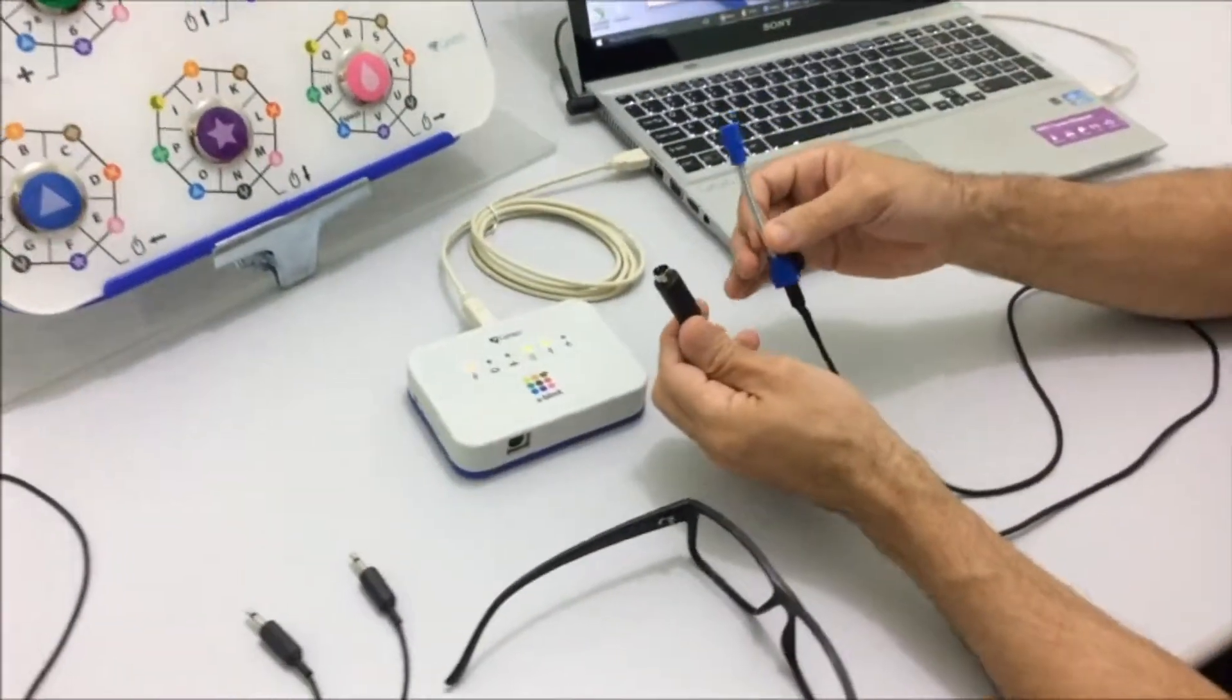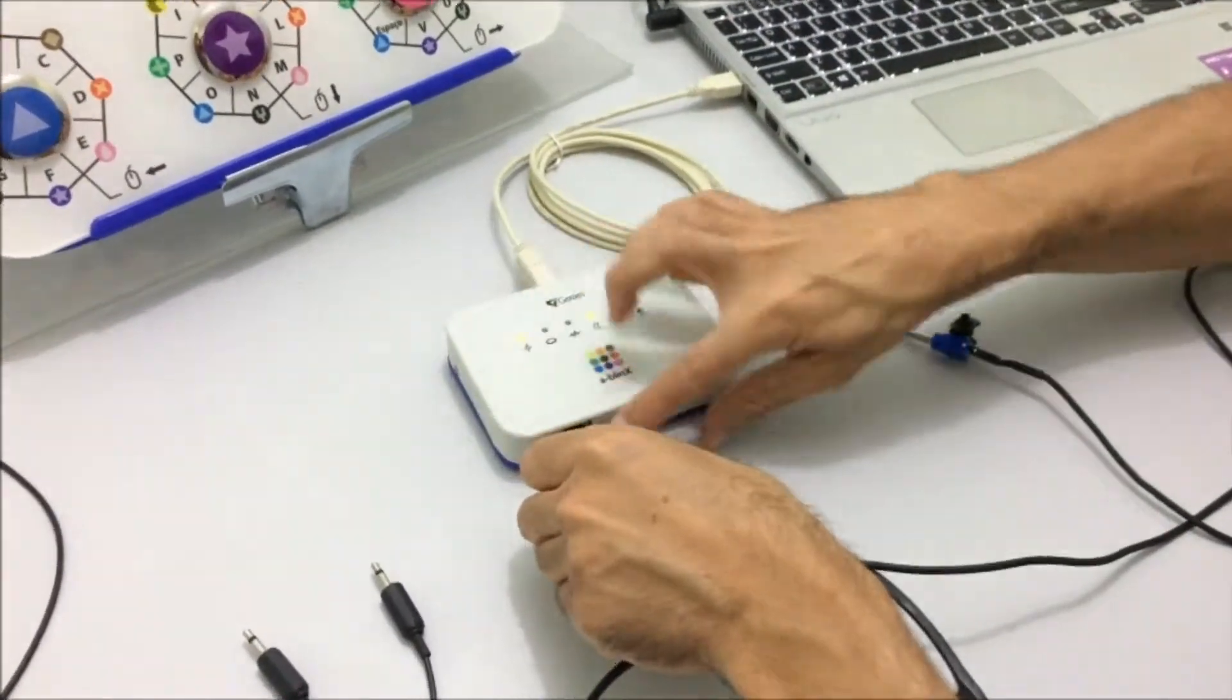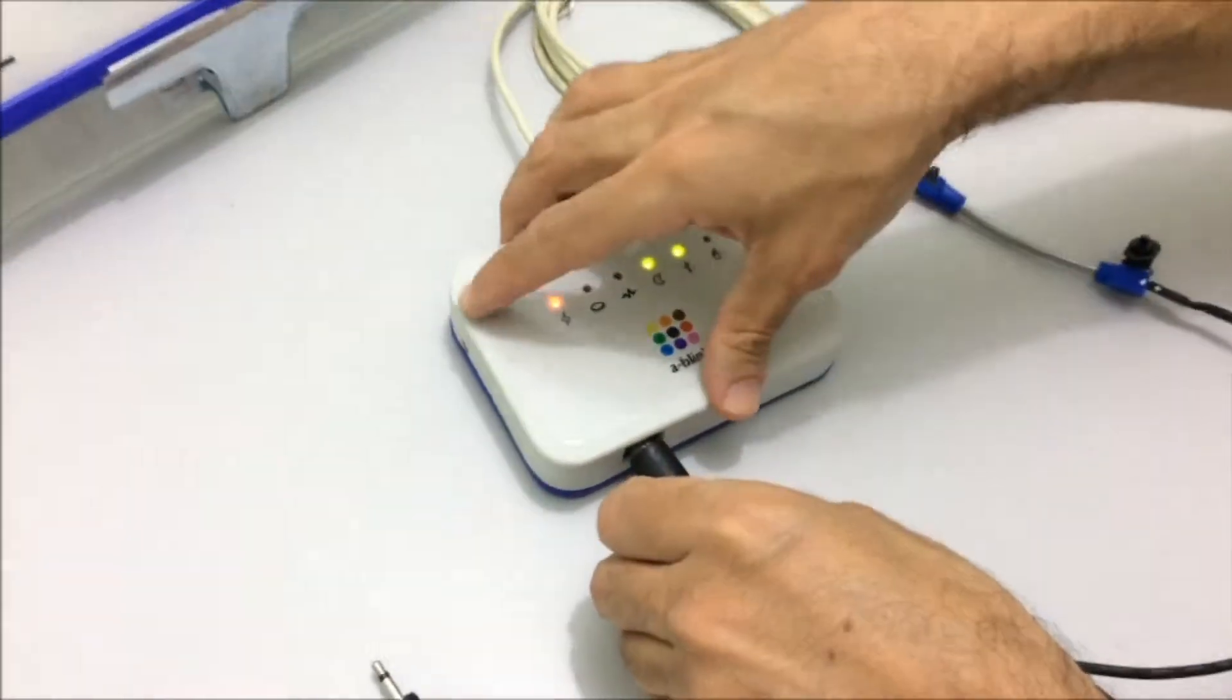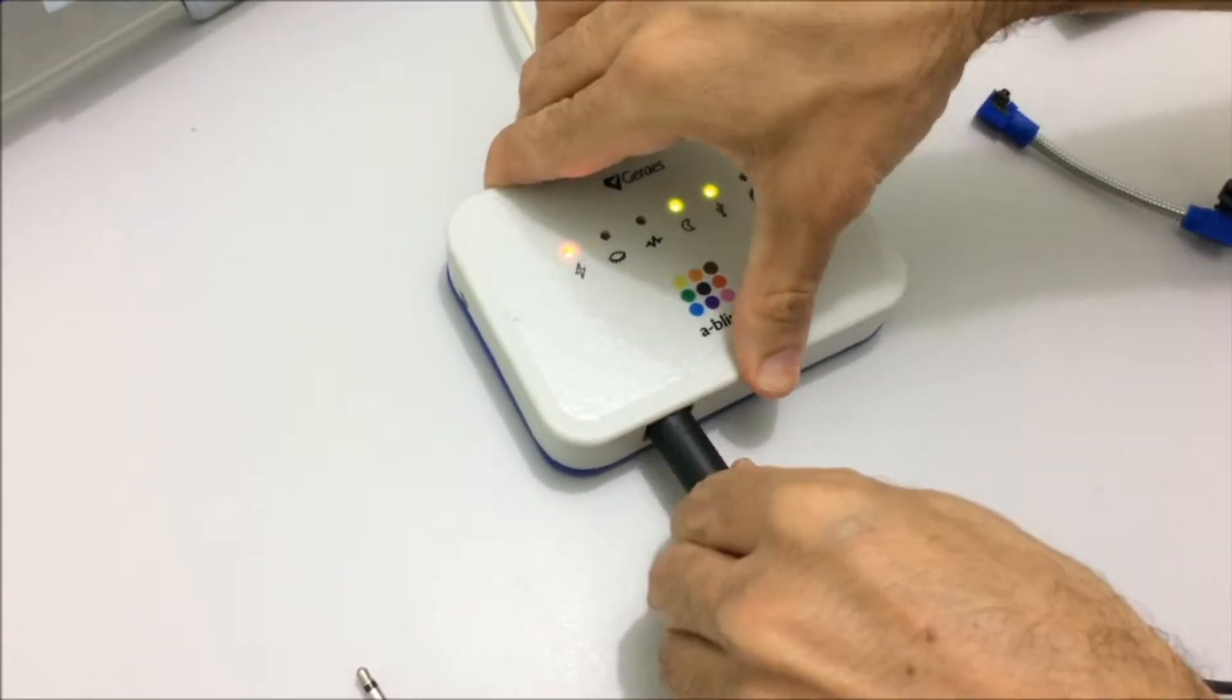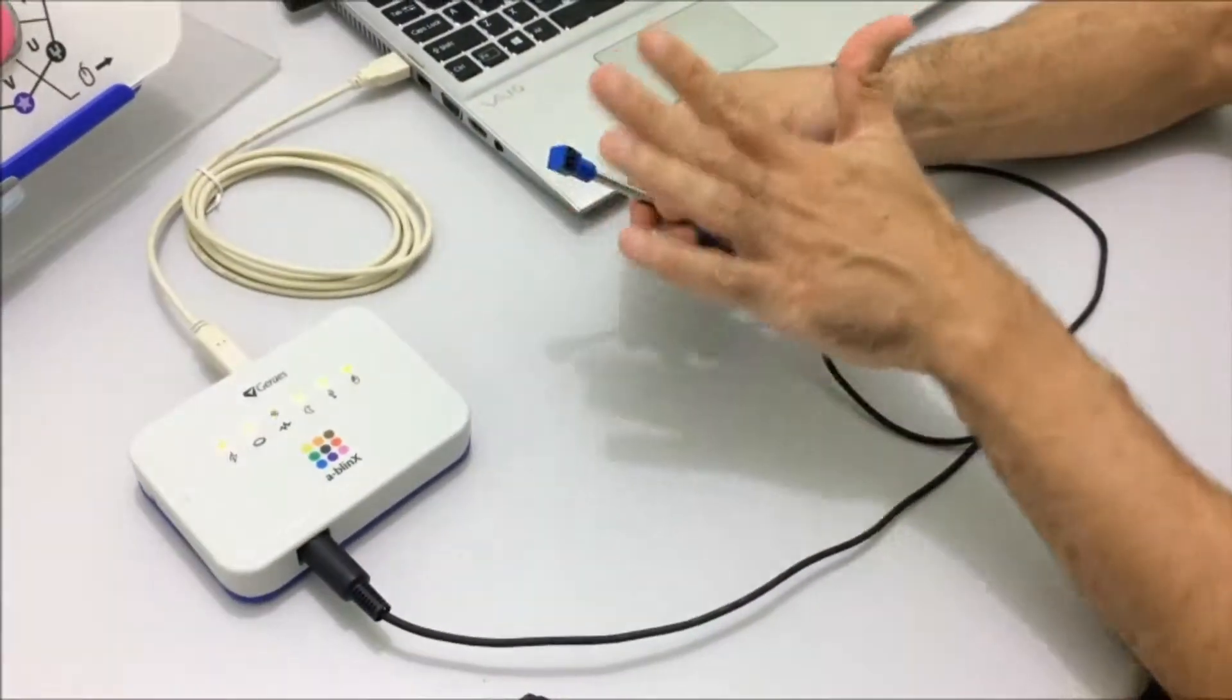Key X is already plugged into the computer as well through the USB port, and now we are going to connect the sensor that detects the eye blink. You just need to plug in this plug in the frontal port, watching for the arrow that has to be facing up.